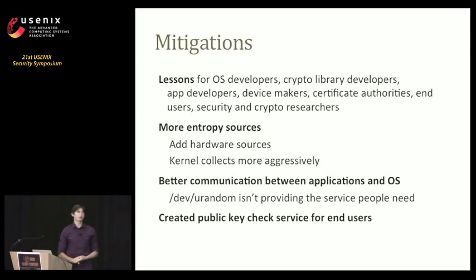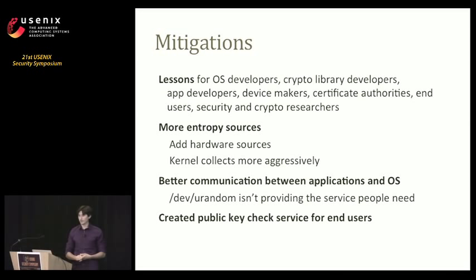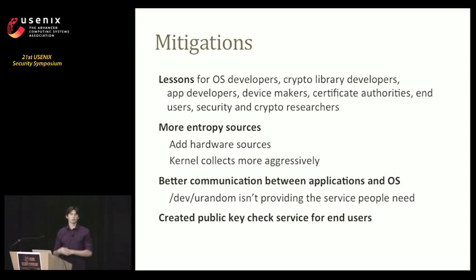There are a lot of mitigations possible. We can add more entropy sources — in some cases the kernel just needs to collect from existing sources more aggressively; in others, we can add hardware sources of entropy. There really needs to be better communication between the OS and applications, as /dev/random and /dev/urandom are not providing the services users need. We've also created a public key check service for end users where they can check keys on their devices to see if they're vulnerable to RSA, DSA, or shared key vulnerabilities.